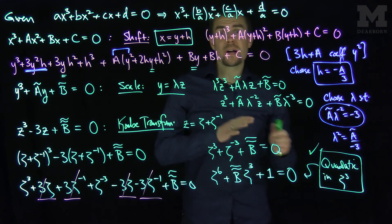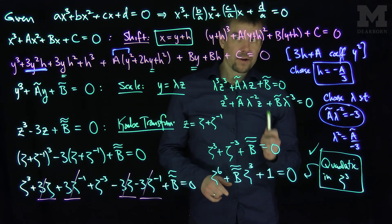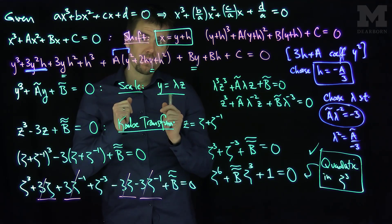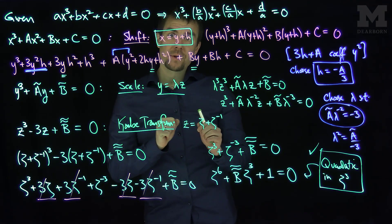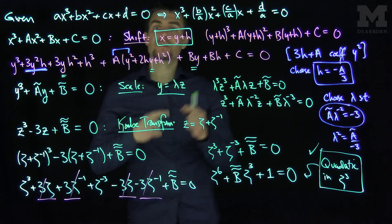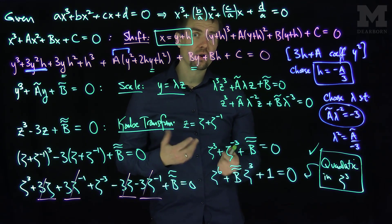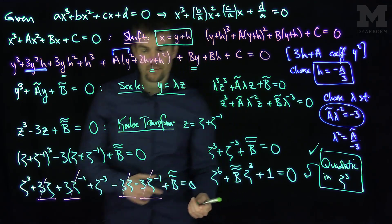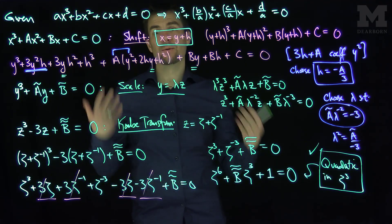So even though we haven't written down an explicit formula, this procedure tells us how to solve cubic equations. First, we shift x to get rid of the y² term. Then we scale y to turn the coefficient of y into -3. Then we perform the Cayley transformation to eliminate the middle terms in the cubic expansion. That turns the problem into a sixth-order polynomial equation that is quadratic in ζ³. We solve for ζ³ using the quadratic formula, find the cube roots to get ζ, plug into z = ζ + ζ⁻¹ to find z, then find y, and finally find x.